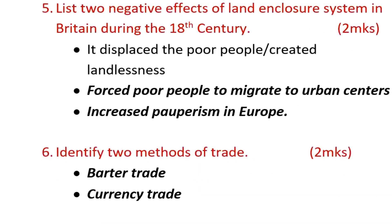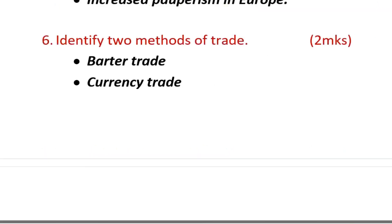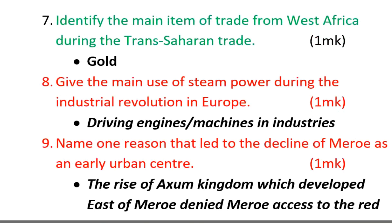Question five: list two negative effects of the land enclosure system in Britain during the 18th century. The enclosure system displaced poor people, creating landlessness; it forced poor people to migrate to urban centers; and it increased poverty in Europe. Question six: identify two methods of trade — barter trade and currency trade. Question seven: identify the main item of trade from West Africa during the trans-Saharan trade — that was gold. Question eight: the main use of steam power during the Industrial Revolution was driving engines and machines in industries.